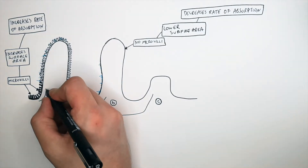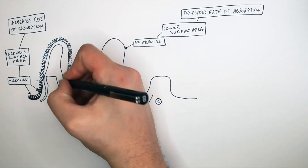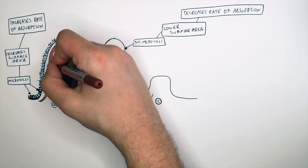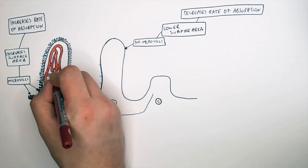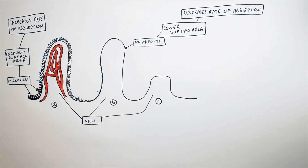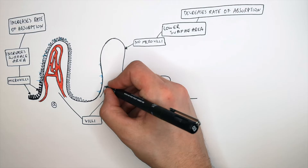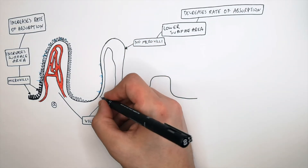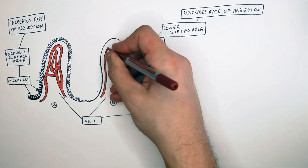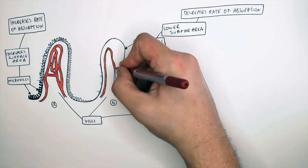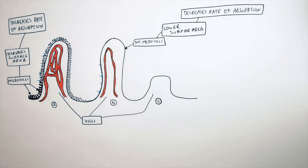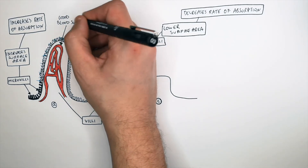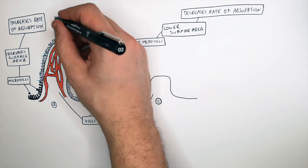The next adaptation of a villi is that it's going to have a good blood supply. What I'm drawing here is a network of capillaries inside the villi, in comparison to villi B where I'm drawing fewer capillaries. So villi B has a lower blood supply than villi A. The villi needs a good blood supply.